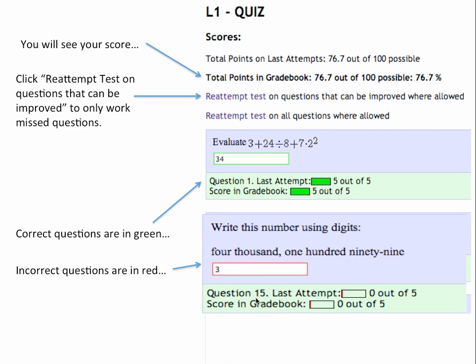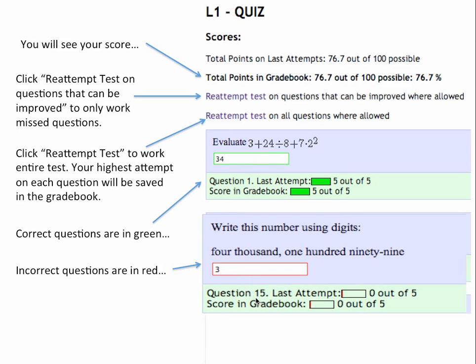Click re-attempt test on questions that can be improved to only work the questions that you missed. Click re-attempt test to work the entire test. Your highest attempt on each question will be saved in the gradebook.